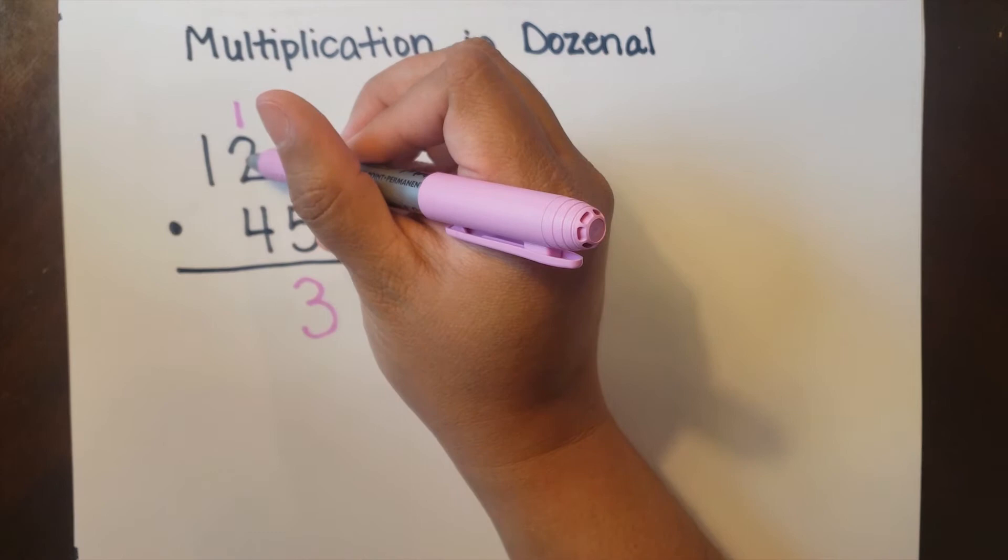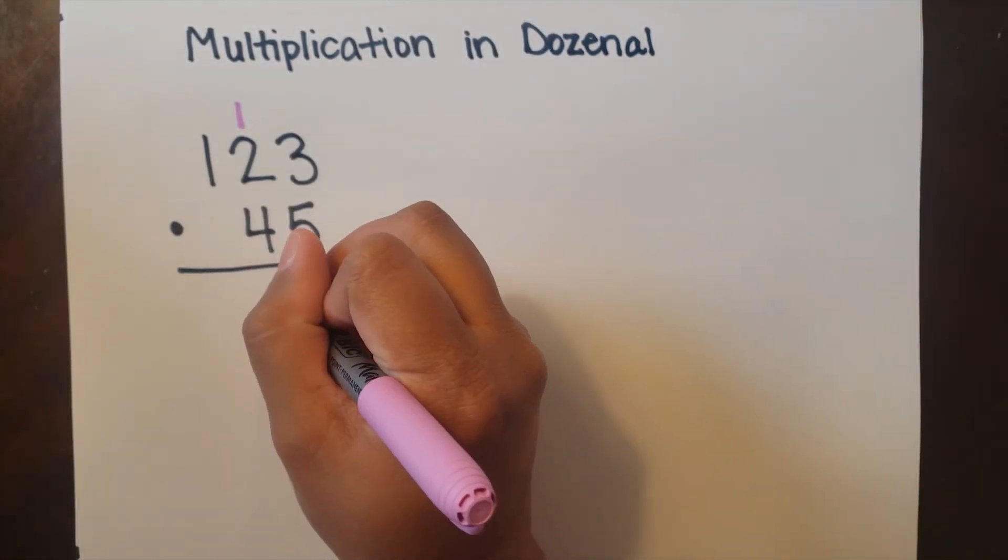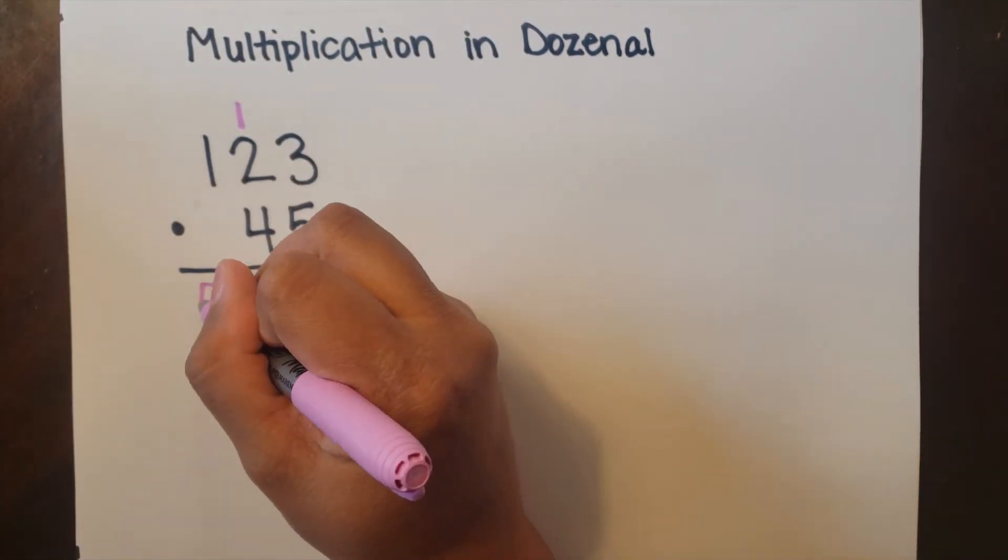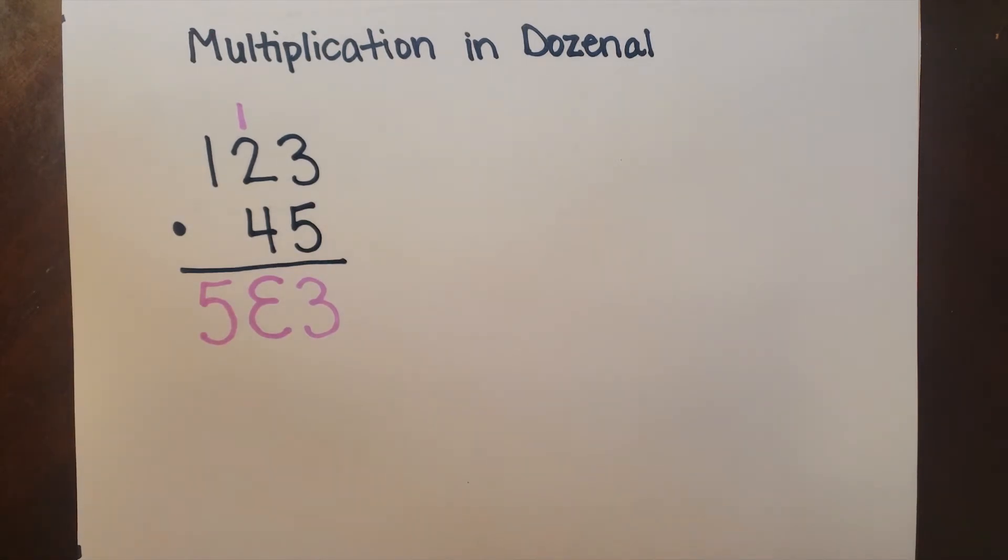Next we have to do 5 times 2. 5 times 2 is deck, add 1 to it, and we get L. Last is 5 times 1, and we just bring that down. That gives us 5 grow L doe 3.